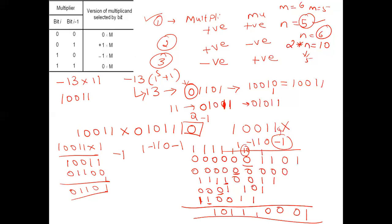Continuing: 1 plus 1 is 10, 10 plus 1 is 11 — this 1 acts as a carry. So we get the answer as 1 1 0 1 1 0 0 0 1, and the answer is definitely minus 143.